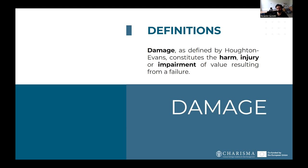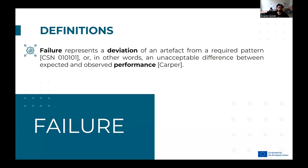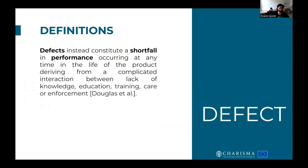Let's look at some definitions. Damage is defined as the harm, injury, or impairment of value resulting from a failure. Failure, on the other hand, represents a deviation of an artifact from a required pattern — in other words, an unacceptable difference between expected and observed performance. Finally, a defect constitutes a shortfall in performance occurring at any time in the life of the product, derived from a complicated interaction between lack of knowledge, education, training, care, or reinforcement.